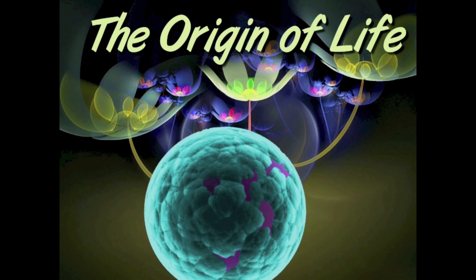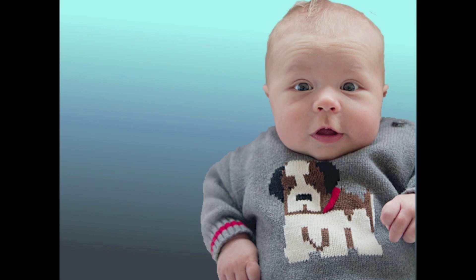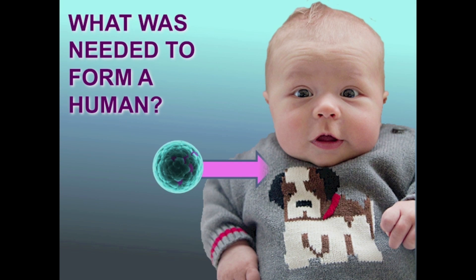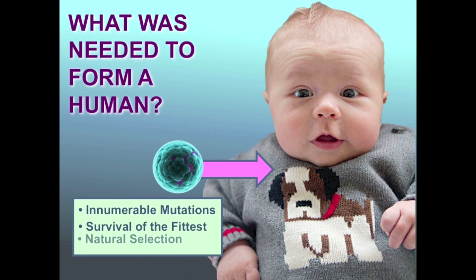Scientists have seen living forms on the Earth and they're curious — they want to find out the origin of life. They know that all plants, animals, and microorganisms are composed of cells. So they speculated that the first cell must have formed on primitive Earth, and that cell divided and formed more complex forms of life, mutated, and through survival of the fittest and natural selection, we end up with humans.